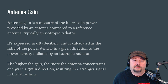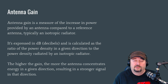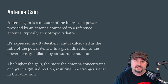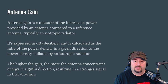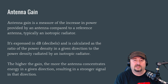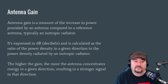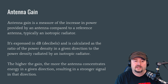Antenna gain is the measure of the increase in power provided by an antenna compared to a reference antenna — typically an isotropic radiator or a dipole. When a manufacturer says an antenna gives you an extra 2.5 dBi, they're comparing it against a reference. dBd compares to a dipole; dBi compares to an isotropic radiator. Gain is expressed in decibels and calculated as the ratio of power density in a given direction to that of an isotropic radiator. The higher the gain, the more the antenna concentrates energy in that direction, resulting in a stronger signal.